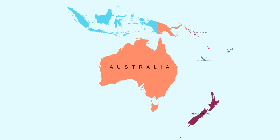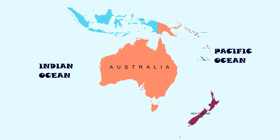The continent of Australia is a single country continent. It is the sixth largest country by total area and the smallest of all seven continental landmasses. This continent is surrounded by the Indian and Pacific oceans.